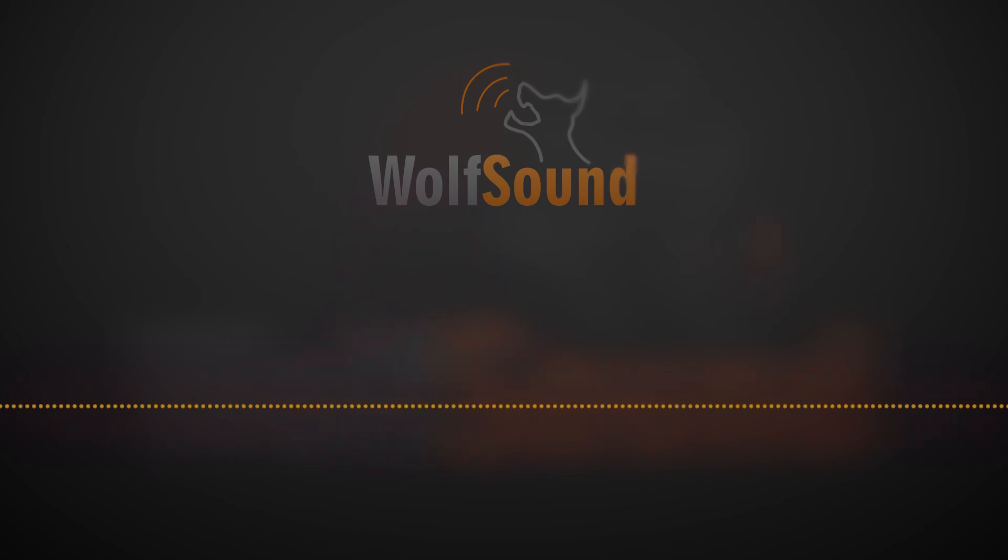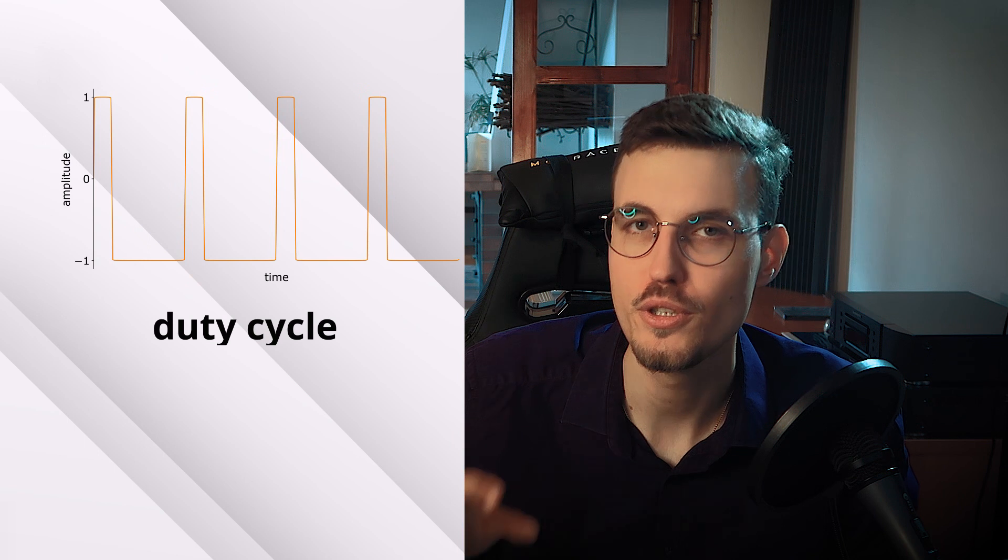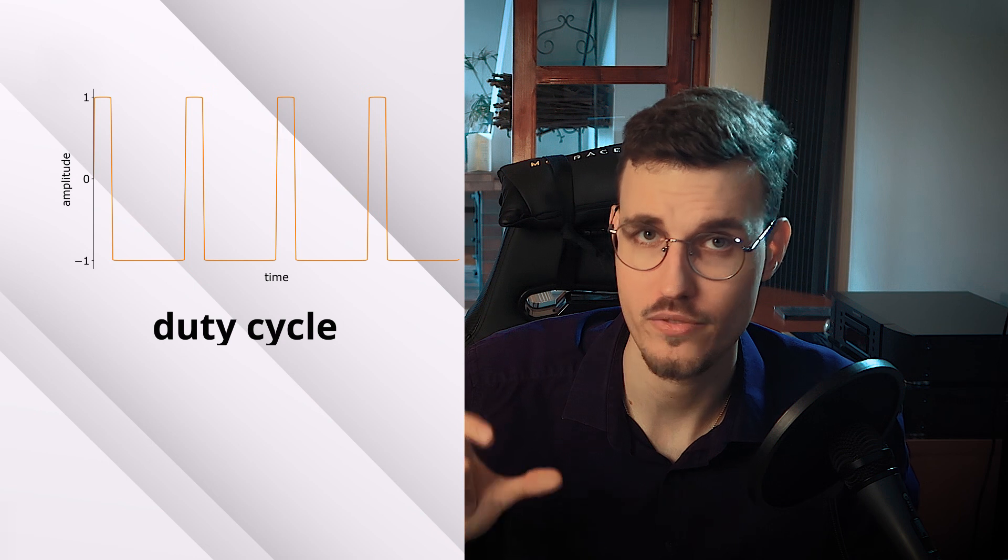The last waveform to be discussed is the pulse waveform, also called a pulse train. The pulse waveform is a generalization of the square waveform. An example pulse waveform at 220 Hz sounds like this. Here you can see the time domain representation of this signal. Why did I say that it is an example waveform? Because the pulse train has a parameter called duty cycle, which controls for what fraction of the period the value of the waveform is 1. In our case, the duty cycle is 20%, so for 20% of the cycle the value of the waveform is 1 and for the remaining 80% the value is minus 1. As you might have guessed, for duty cycle equal to 50% we obtain the square waveform.